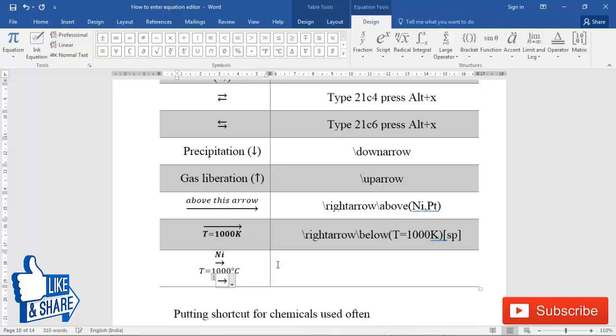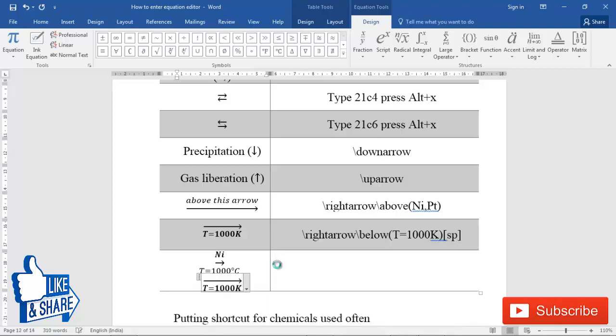I know that the thing that I'm going to type below takes more space lengthwise than the thing that I'm typing above. So first include the thing which takes more space: below T=1000K, and then above Ni.